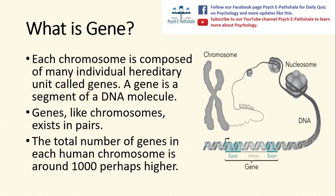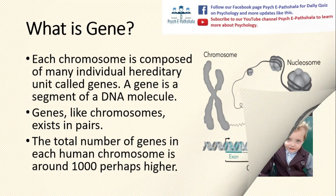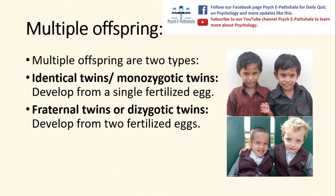Each chromosome is composed of many individual hereditary units called genes. A gene is a segment of a DNA molecule. Genes, like chromosomes, exist in pairs. The total number of genes in a human chromosome is around 1,000 or perhaps higher, and these genes define particular hereditary characteristics. When we talk about multiple offspring, identical twins or monozygotic twins develop from a single fertilized egg, meaning they share the same genetic code. Fraternal twins or dizygotic twins develop from two different fertilized eggs and may share different genetic codes.